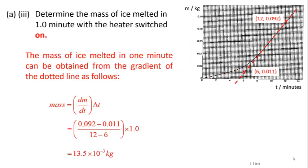The mass of ice melted in 1 minute can be obtained from the gradient of the dotted lines, so the mass will be 13.5 times 10 to the power of minus 3 kg.